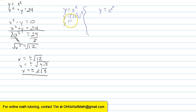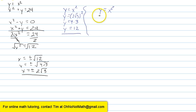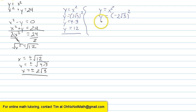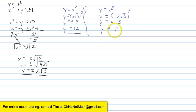2 squared is 4. The square root of 3 squared is 3. So y equals 4 times 3, which is 12. Now let's do the same thing for my other value of x. I'll plug in negative 2 times the square root of 3, all squared. Negative 2 squared is 4, the square root of 3 squared is 3. So y equals 12 for this one as well.